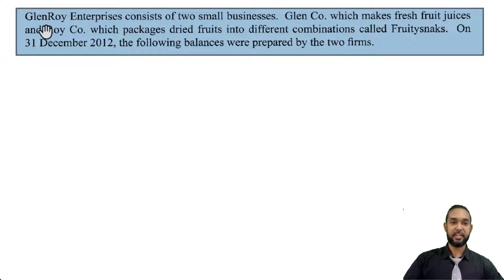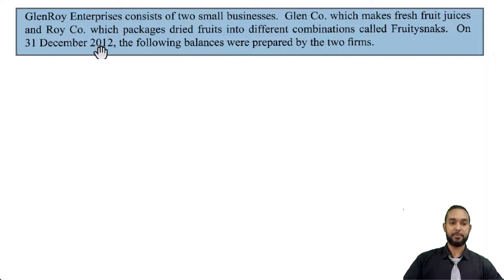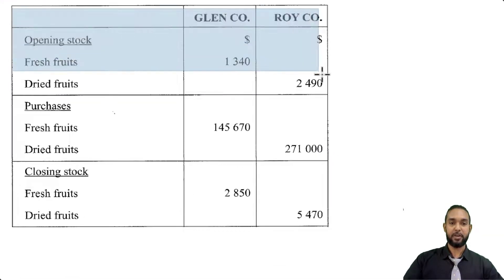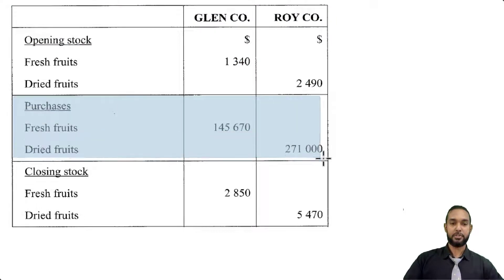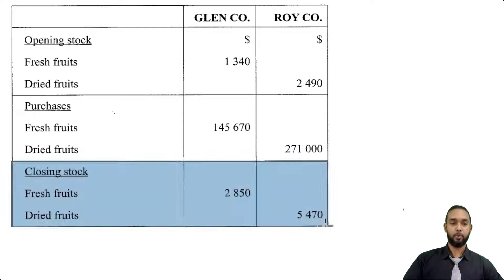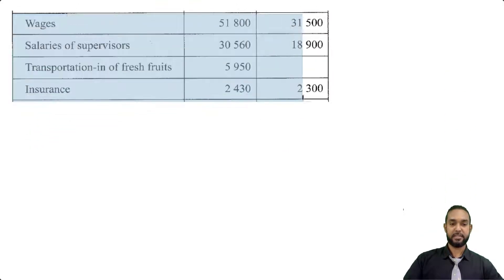Our opening paragraph tells us that Glenroy Enterprises consists of two small businesses: Glen Company, which makes fresh fruit juices, and Roy Company, which packages dried fruits into different combinations called fruity snacks. On the 31st of December 2012, the following balances were prepared by the two firms. We have opening stock of fresh fruits for Glen and dried fruits for Roy, followed by purchases of fresh fruits for Glen and dried fruits for Roy. Then we have closing stock balances — fresh fruits for Glen and dried fruits for Roy. Now we're seeing some expense items here.